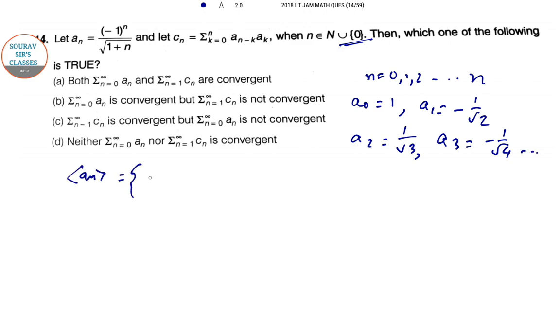So like this, the sequence a_n will be 1 minus 1 by root 2, 1 by root 3 minus 1 by root 4, 1 by root 5 dot dot dot. So this is the pattern. Let u_n if we take 1 by n to the power half.